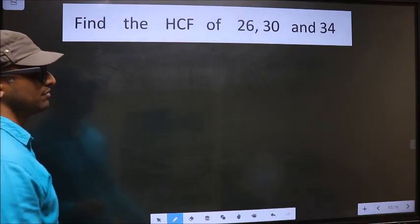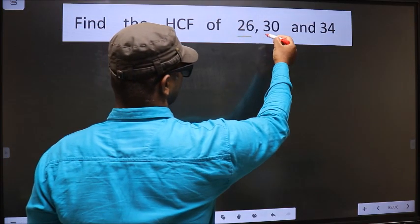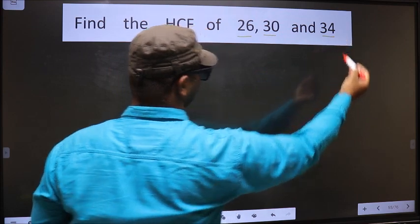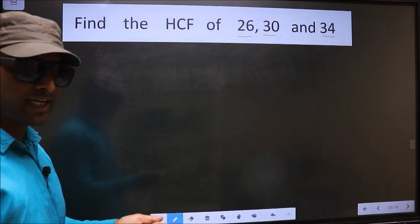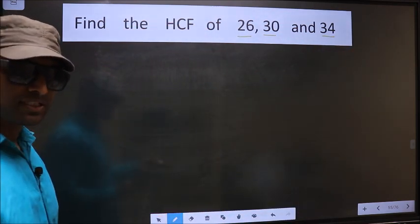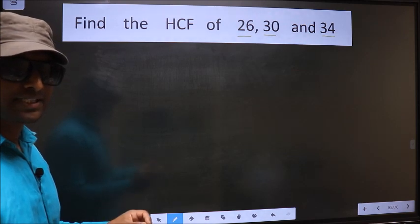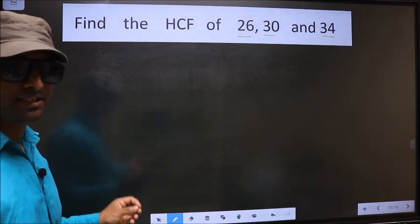Find the HCF of 26, 30 and 34. To find the HCF, first we should do the prime factorization of each number separately.